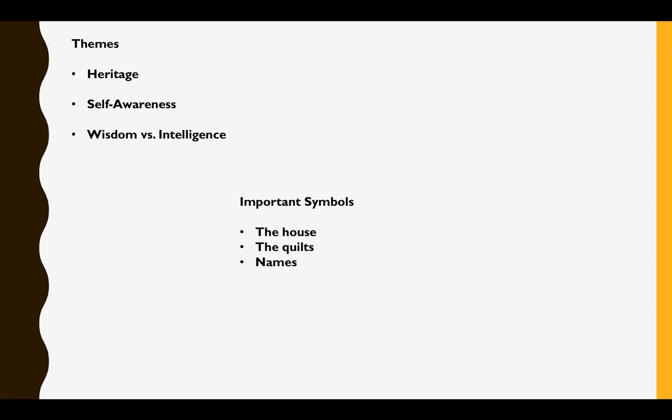Obviously the quilts are very important, because they ask us to decide: is it better and more honorable to acknowledge our heritage by continuing to use it and interact with it, or to frame it and act like it's finished? And names, of course, are symbolic in the story. Dee wants to change her name because she thinks of 'Dee' as going all the way back to a name given by a slave owner. Like Malcolm X and many of the black Muslims, she chooses a different name that she thinks better encompasses her identity. There is nobility in that, but she's also giving away part of her heritage by dismissing her name.